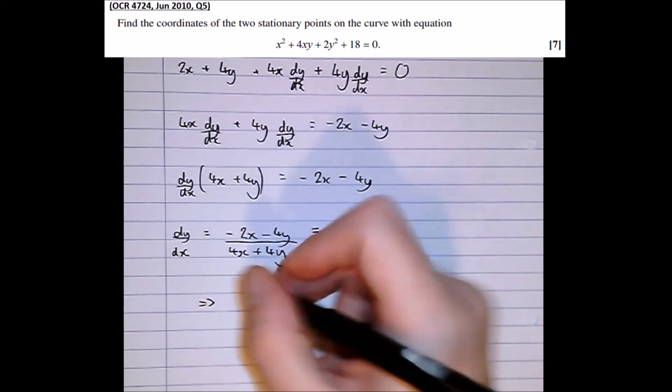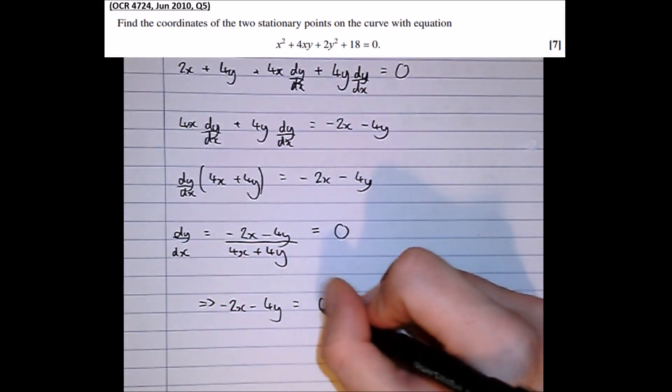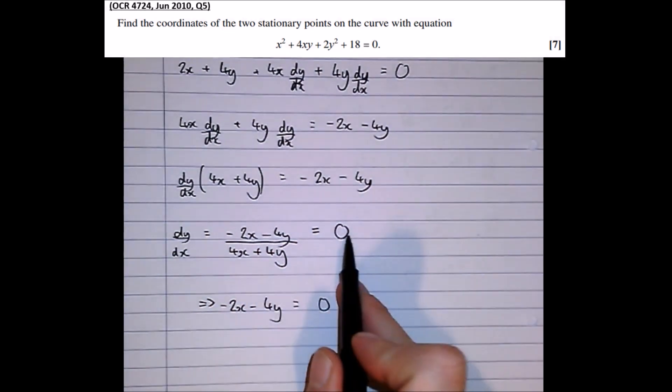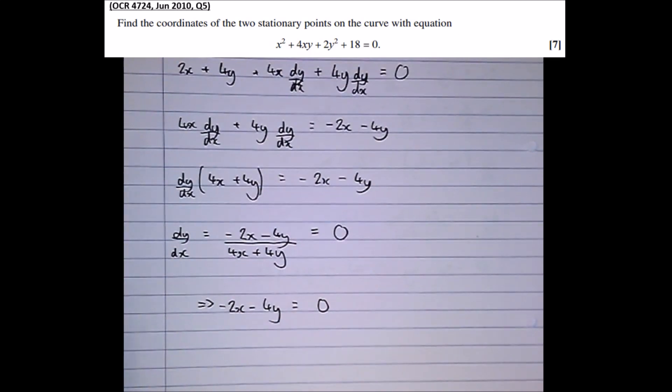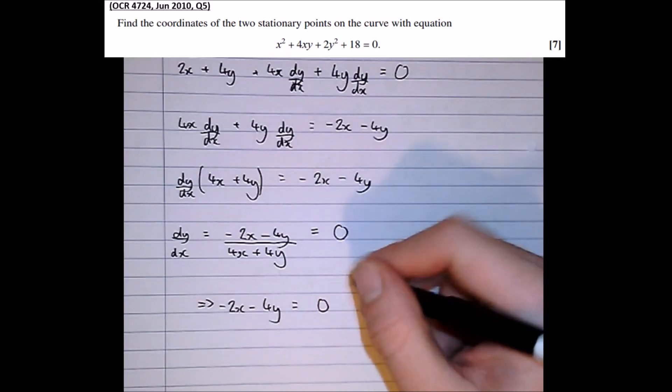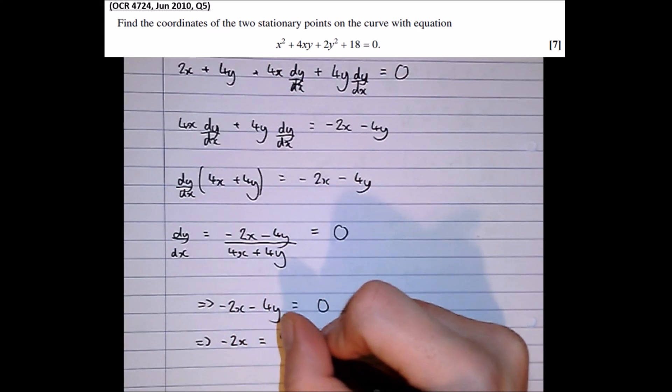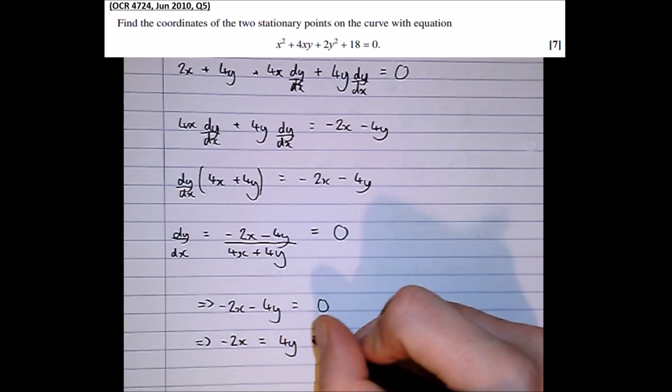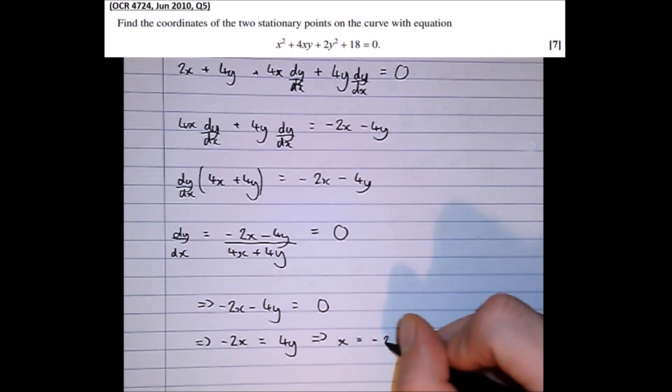So times that by 0 and that by 4x plus 4y, we end up with minus 2x minus 4y equals 0. Or we could think of it just as a fraction equal to 0, where the only thing that can possibly make that equal to 0 is the numerator being 0. So taking it over to the other side now, we get minus 2x equals 4y, then dividing by minus 2, we get x equals minus 2y.